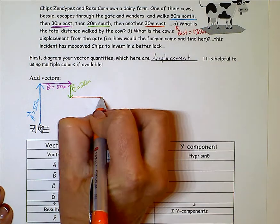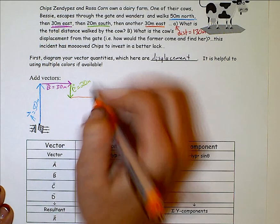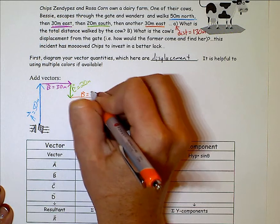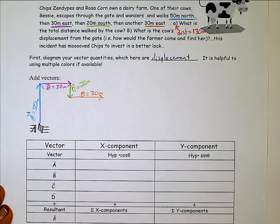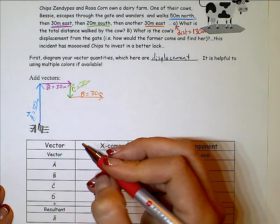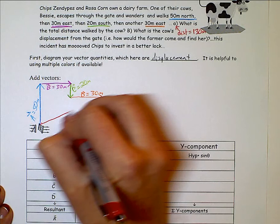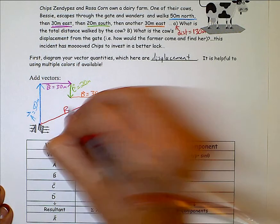And I want this 30 to be the same length as that 30. So I've added them all tip to tail. The resultant goes from the very beginning to the very end. Make sure that you have arrows on everything. That's what I'm trying to find is my resultant.